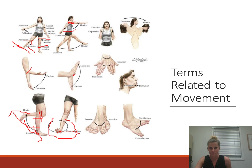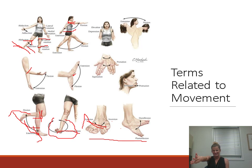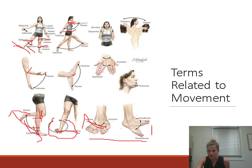Inversion and eversion are related to the foot. Inversion is turning the sole of the foot inward — go ahead and flip the sole of your foot inward. Eversion is the opposite — try to twist the sole of your foot outward; it's really hard to evert. Dorsiflexion: the dorsal side of the foot is the back side. Dorsiflexion is flexing the dorsal part of the foot up — point your toes up. Plantarflexion is down towards the plantar surface — point your toes down.